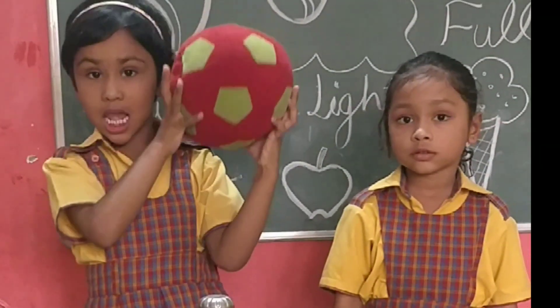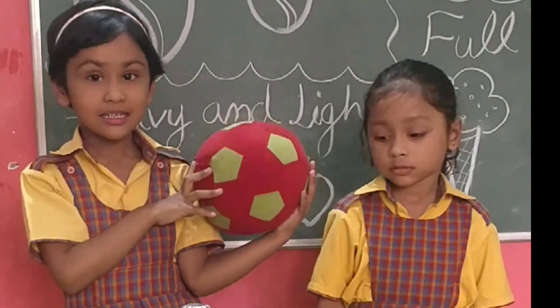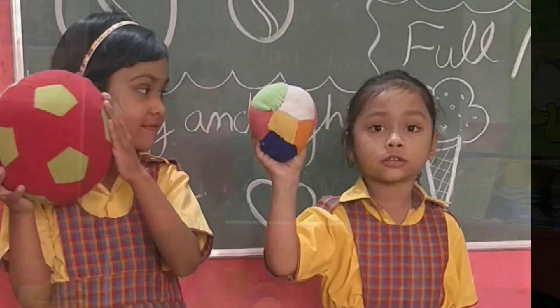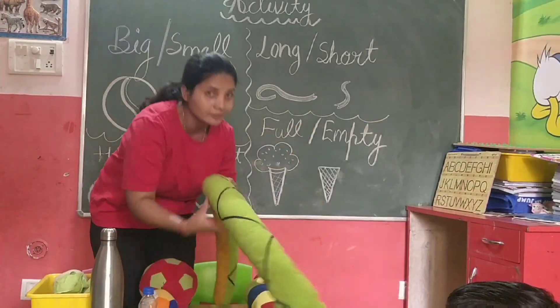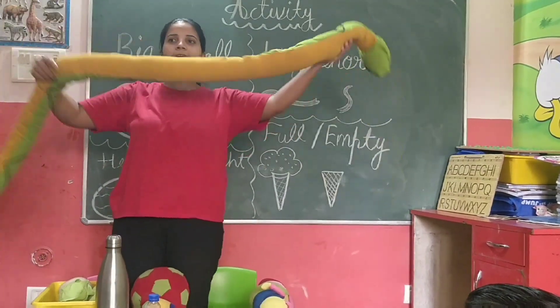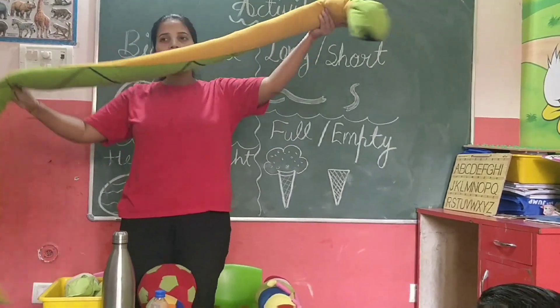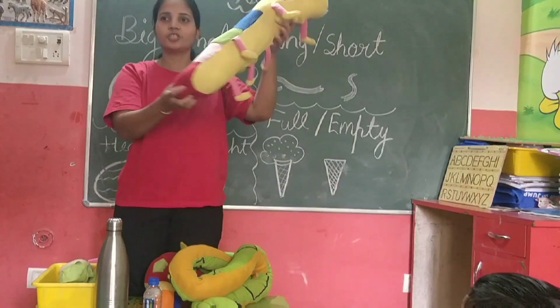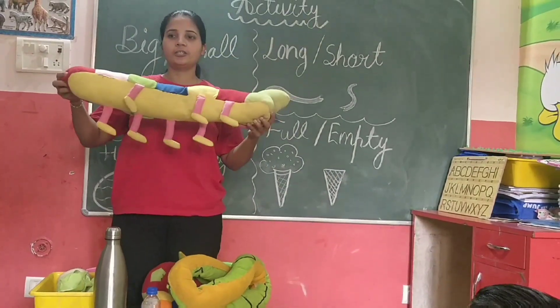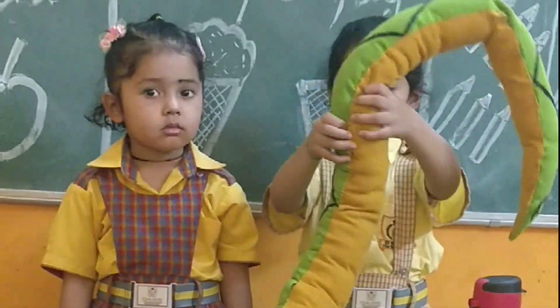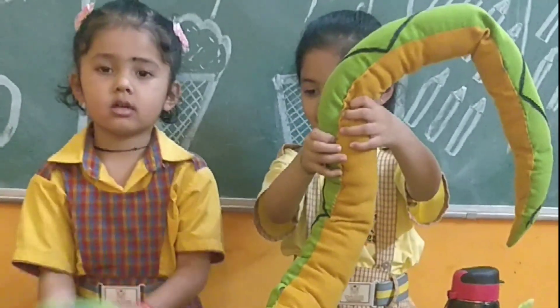Small. Navika, what is small? This is long. This is long, and this one is short. Which one is long? Pargavi, which one is short?